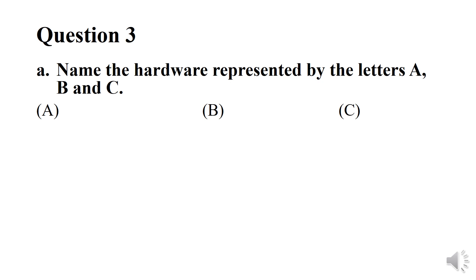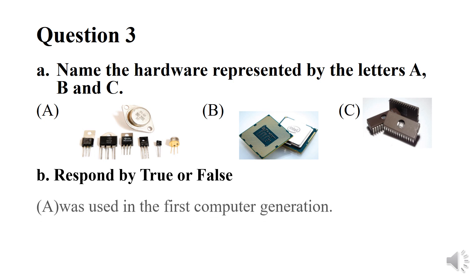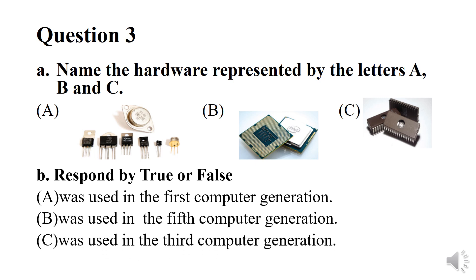Question number three. A. Name the hardware represented by the letters A, B, and C. B. Respond by true or false. A was used in the first computer generation. B was used in the fifth computer generation. C was used in the third computer generation.